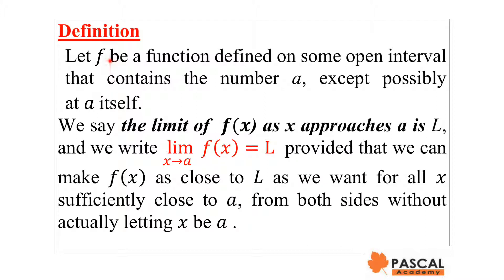Let's define the limit of a function as x approaches a number. Our definition is an informal definition of limit. If f is a function defined on some open interval that contains the number a, except possibly at a, we say the limit of f(x) as x approaches a is L, provided that we can make f(x) as close to L as we want for all x sufficiently close to a from either side, without actually letting x be a.